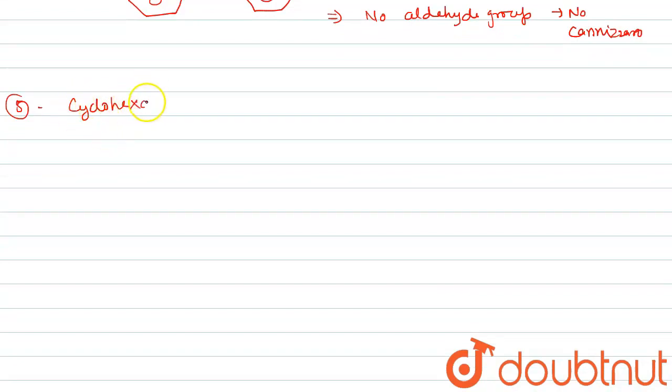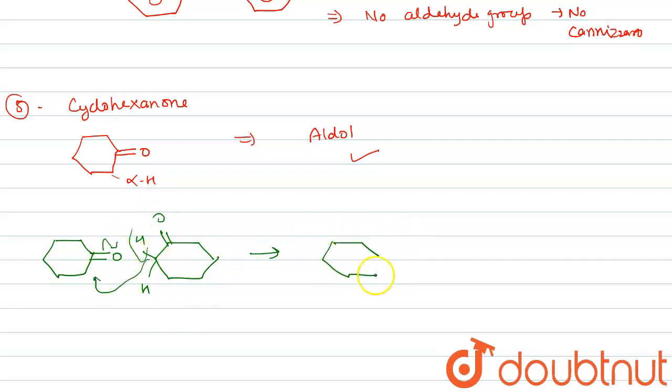Fifth one is cyclohexanone. There is alpha hydrogen, so aldol reaction takes place. H plus removes, negative charge attacks on carbonyl, formation of alcohol.